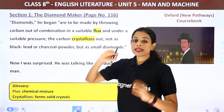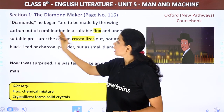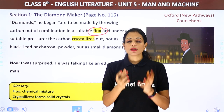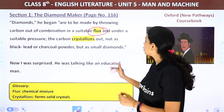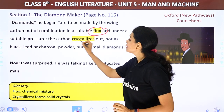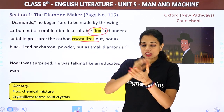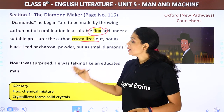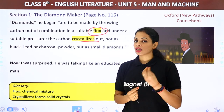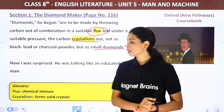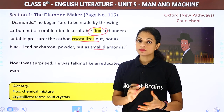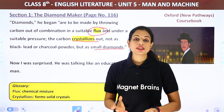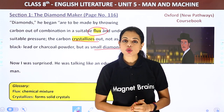When carbon is placed in a suitable chemical mixture — a flux — under a particular pressure, the carbon crystallizes out. Not as black lead or charcoal powder, but it converts into small diamonds. The narrator was surprised — this man was talking like an educated person. Having studied mineralogy himself, the narrator could tell this stranger really knew what he was talking about.